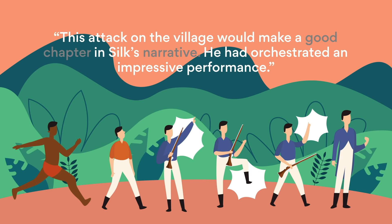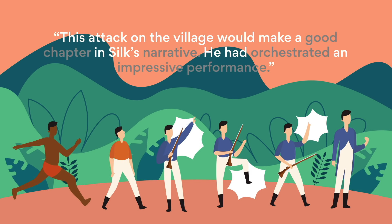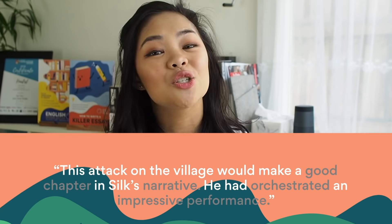'This attack on the village would make a good chapter in Silk's narrative — he had orchestrated an impressive performance.' The words 'good chapter,' 'narrative,' 'orchestrated,' and 'impressive performance' all culminate to show how for Silk, his presence in the new colony and his obligations to the governor are all theater. He is more obsessed with creating a story worth reading rather than seeing the damage, pain, and suffering inflicted upon the natives.